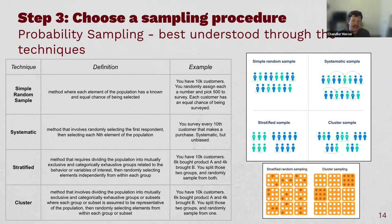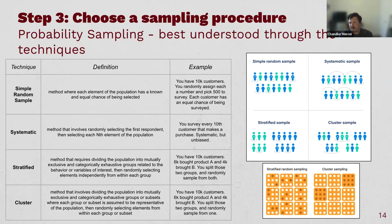Systematic sampling is where you decide on an interval — like every 10th or 12th person — and survey them in that pattern. As it cycles through, it should ultimately be random and probability-based without researcher influence. For example, if you have a website you could survey every 10th visitor. There are some issues with it, but it's ultimately unbiased and allows for sampling over time rather than just the first 500 visitors.